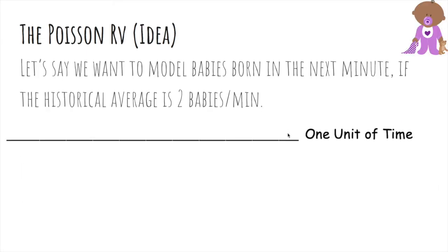But we're going to actually take the limit of a binomial. So let's say we want to model babies born in the next minute, if the historical average is two babies per minute. Here's one unit of time. If we break it into five small chunks, and we say, at each of these five chunks, either babies born or not, then the p that would keep our average to 2 is 2 fifths, because the expected value of a binomial is np, and 5 times 2 fifths is 2.